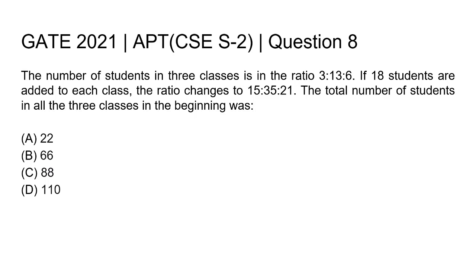Hello everyone. This is a question from GATE 2021 Computer Science Set 2. The number of students in three classes is in the ratio of 3 to 13 to 6. If 18 students are added to each class, the ratio changes to 15 to 35 to 21. We have to find out the total number of students in all three classes in the beginning.